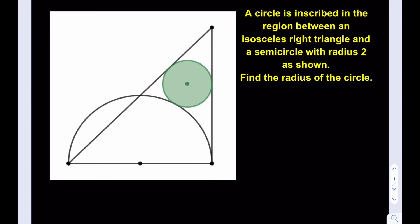Hello everyone, in this video we're going to be solving an interesting geometry puzzle. A circle is inscribed in the region between an isosceles right triangle and a semicircle with radius 2 as shown. Find the radius of the circle. So give this problem a try before you see the solution.